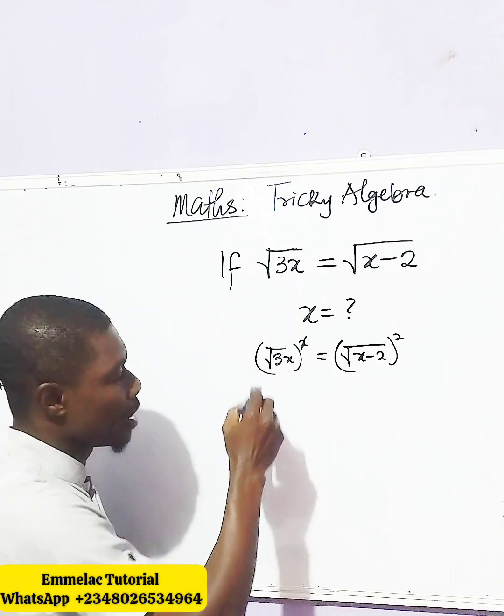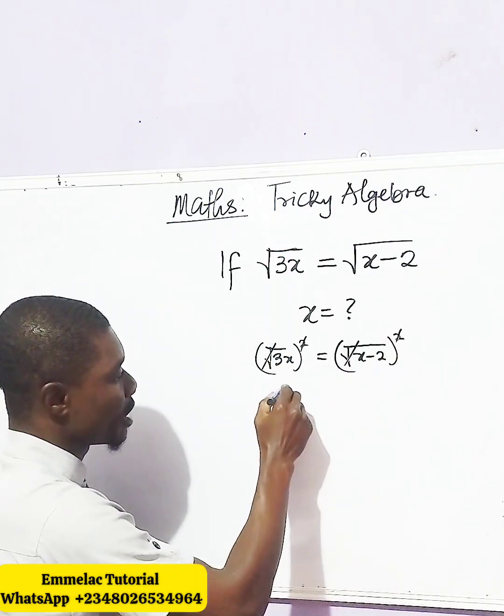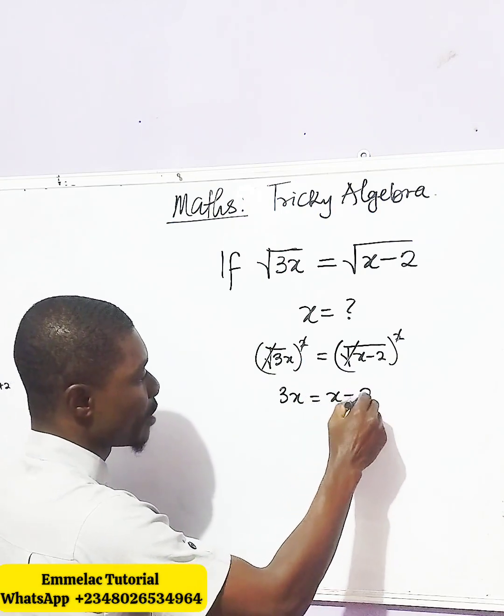So this square undoes the square root, same here, and we're left with 3x equals x minus 2.